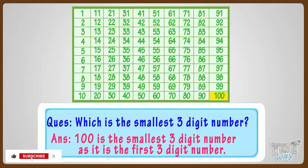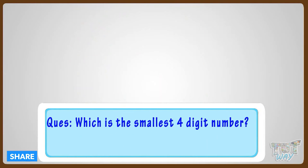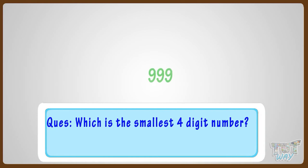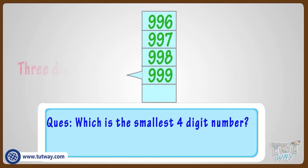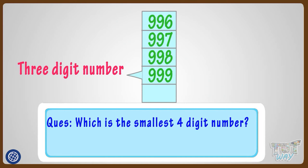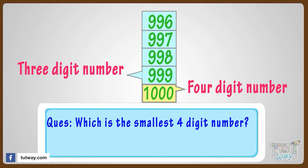Now, which is the smallest four-digit number? Let's find it out. Up to 999, we have three-digit numbers, and after 999 we have 1,000, which is a four-digit number and the first four-digit number. So 1,000 is the smallest four-digit number.